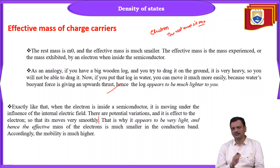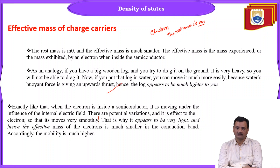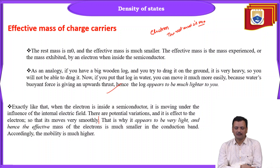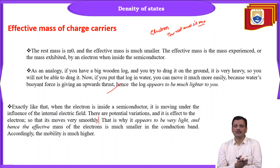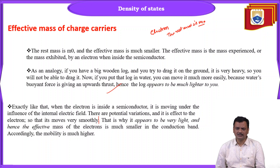Exactly the same way, when an electron is inside a semiconductor it moves under the influence of internal electric fields and potential variations, so it moves very smoothly and appears very light. Hence the effective mass of the electron is much smaller in the conduction band and accordingly the mobility is much larger. The bands provide additional energy to the charge carriers so they can move very easily, and their effective mass appears very small compared to their rest mass.